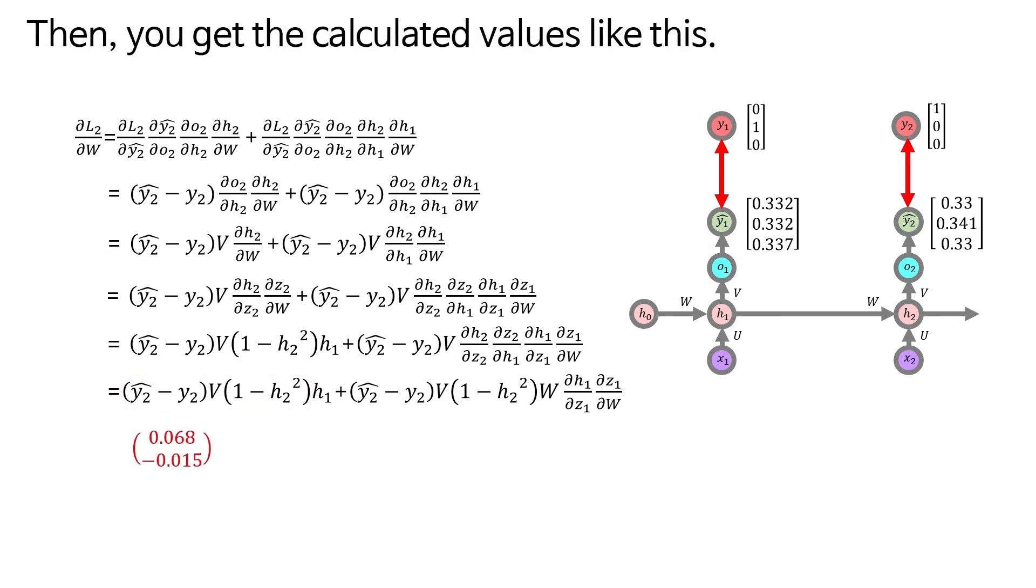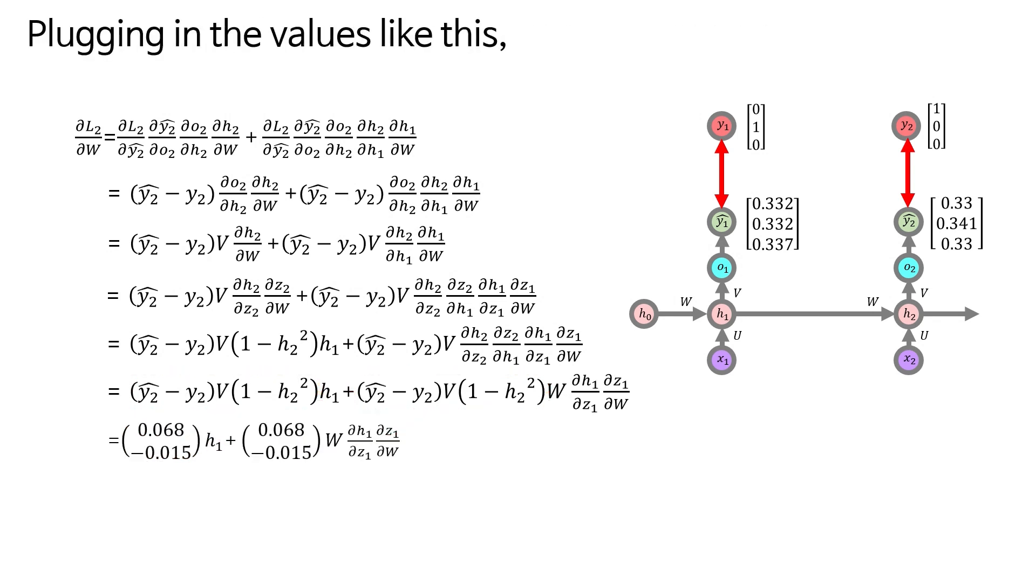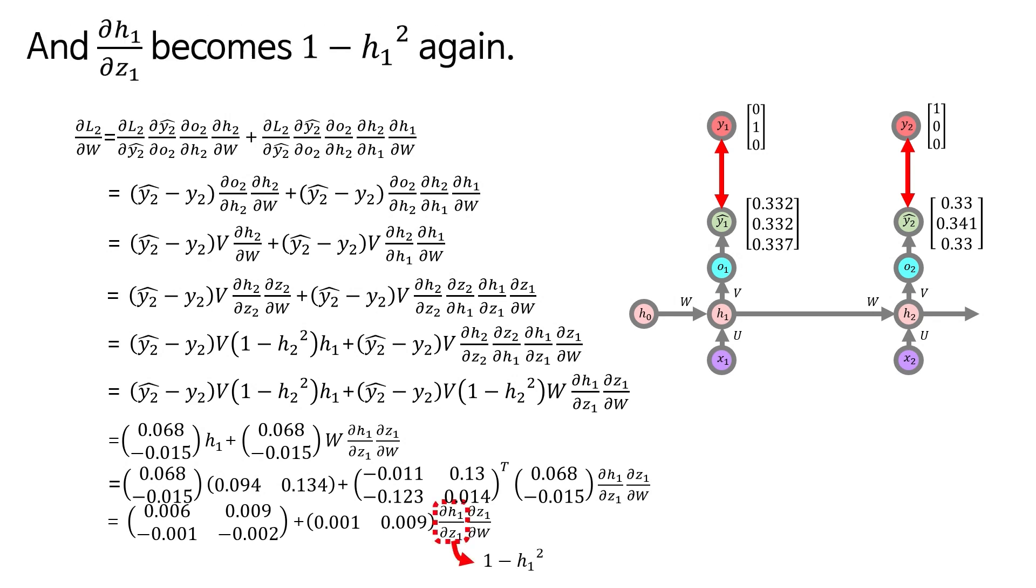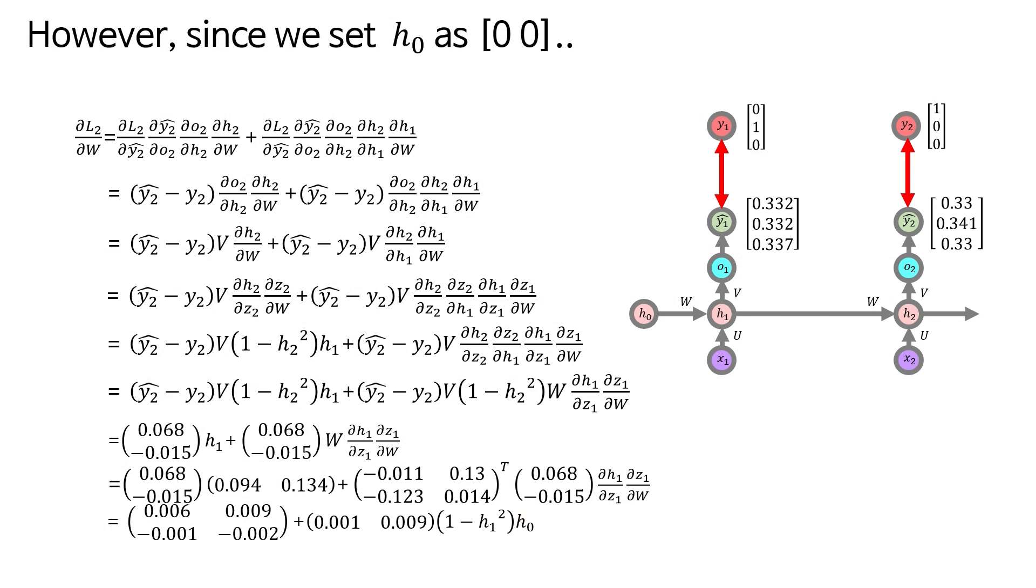Then, you get the calculated values like this. This value can be used in two places in common. Plugging in the values like this. The calculation results in the following. And, del H1 del Z1 becomes 1 minus H1 square again. And del Z1 del W is equal to H0 according to the formula. However, since we set H0 as 0, 0, the latter part can be treated as 0.